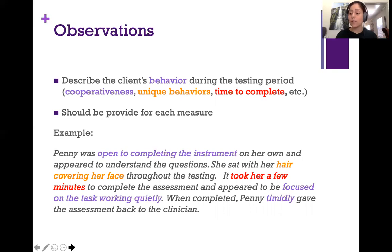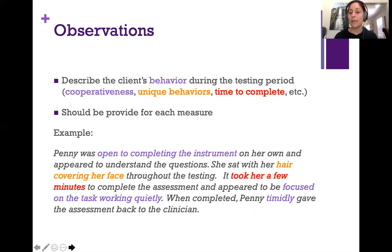These pieces of information are important because they help provide useful context for interpretation and diagnosing. You should provide observations for each of the measures. Here's an example: describing the client's behavior and cooperativeness — the client was open to completing the instrument, appeared focused on the task and working quietly, and timidly gave the assessment back to the clinician. Unique behaviors noted: she sat with her hair covering her face, which may have affected her reading of the questions. Time to complete: it took her a few minutes. You would include this for each measure.